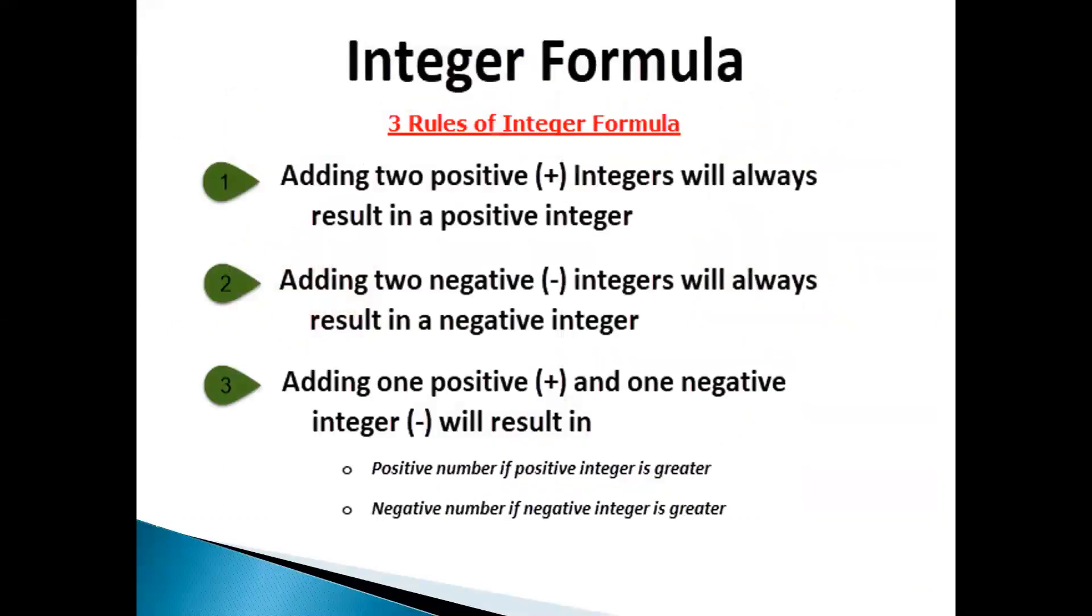There are a few rules of integer. Adding two positive integers will always result in a positive integer. Adding two negative integers will always give you a negative integer. Adding one positive and one negative integer will result in a positive number if positive integer is greater, negative number if negative integer is greater. The sign, addition and subtraction, plays a vital role in the integer.